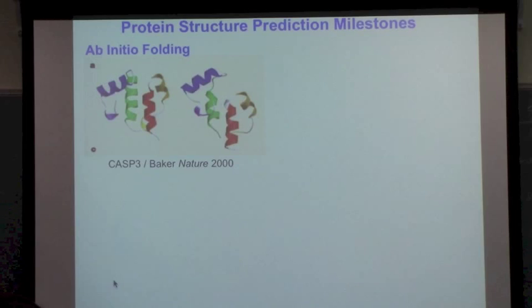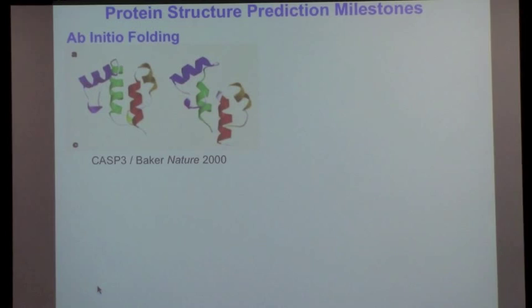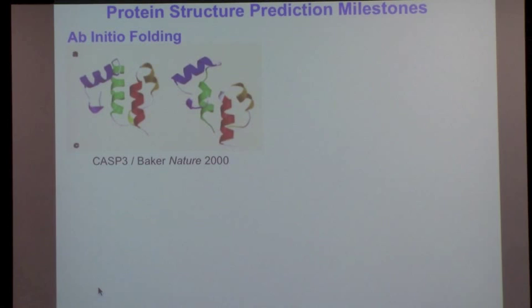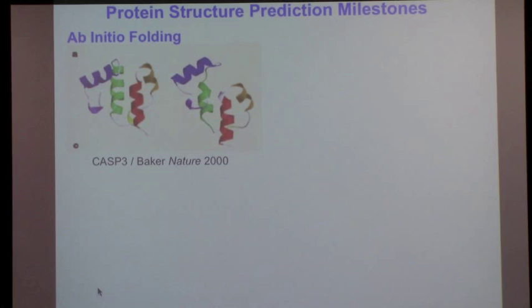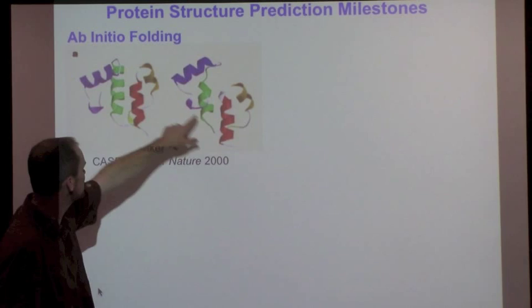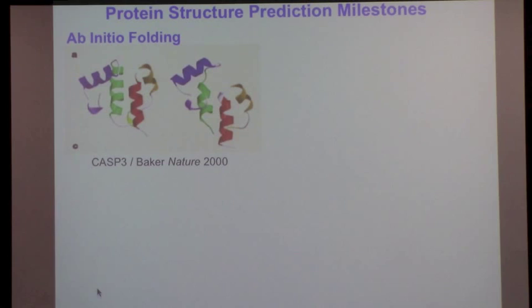There's a competition called CASP where new structures of proteins are determined, and before they're published, the sequences are sent out to theoreticians who try to fold the proteins. The first two times they did this, nobody got any answers correct. This was in the 90s, a very frustrating time in the field. It turns out the blind test is the only real true test you can do. David Baker's lab came back with this.